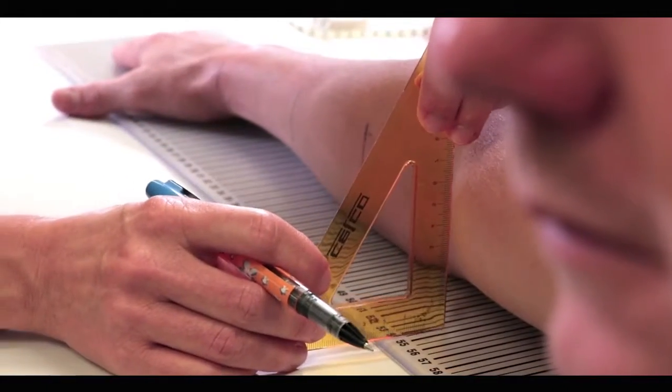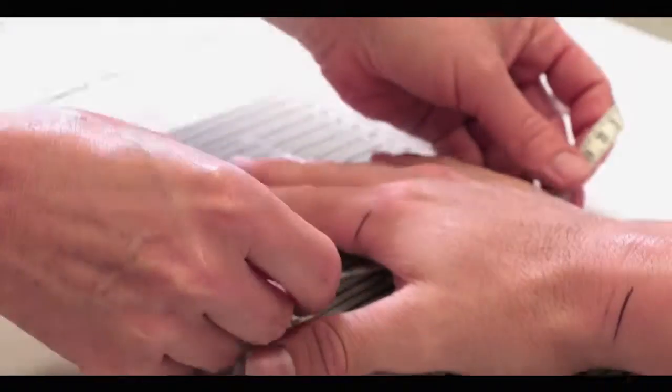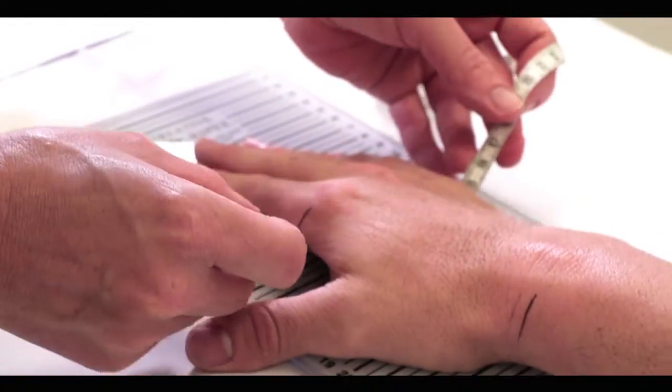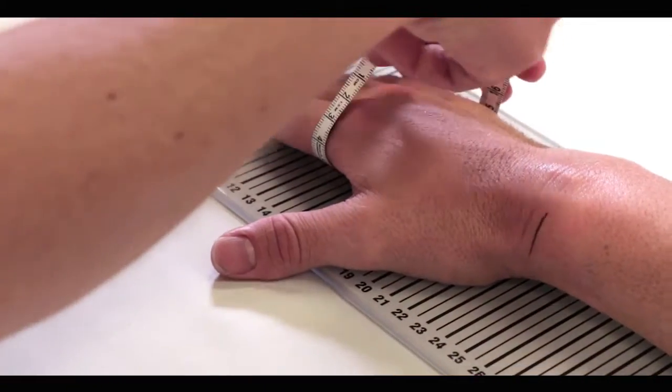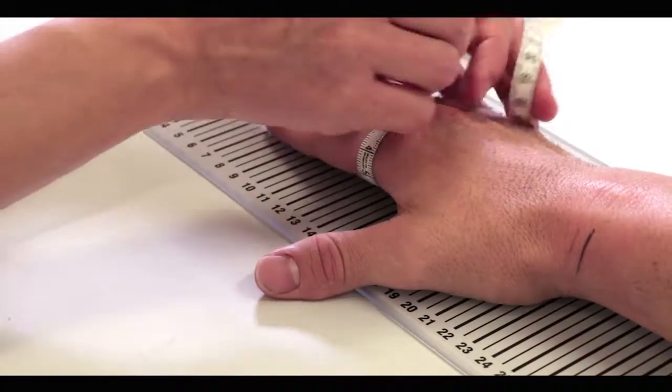To measure the arm, place the measuring tape distal to the marks on the skin. Read the circumference measurement from the proximal edge of the tape measure.